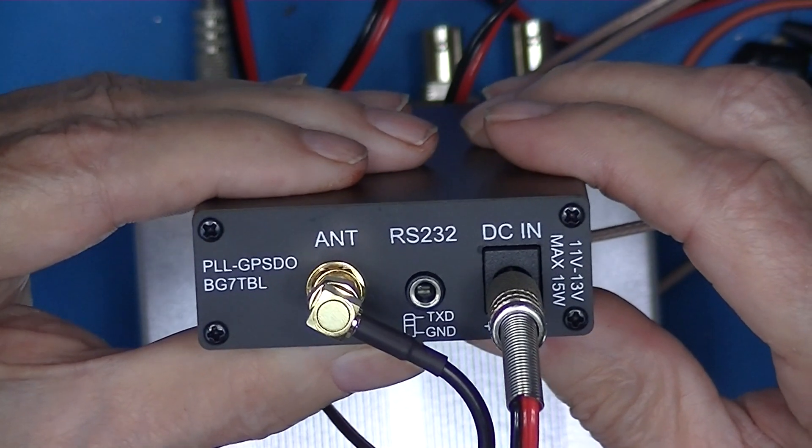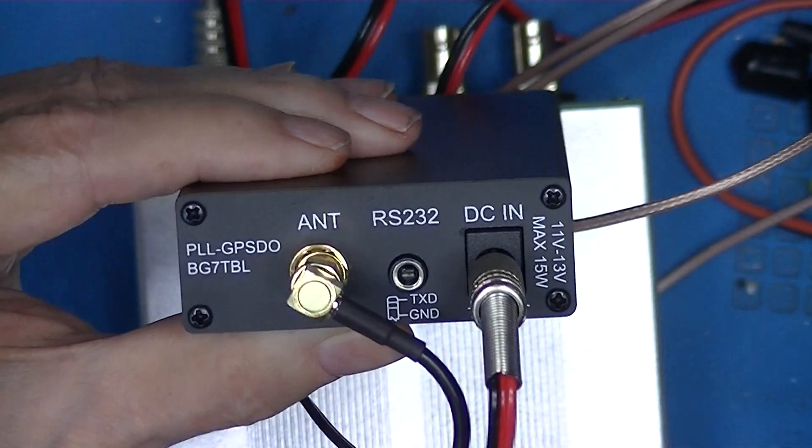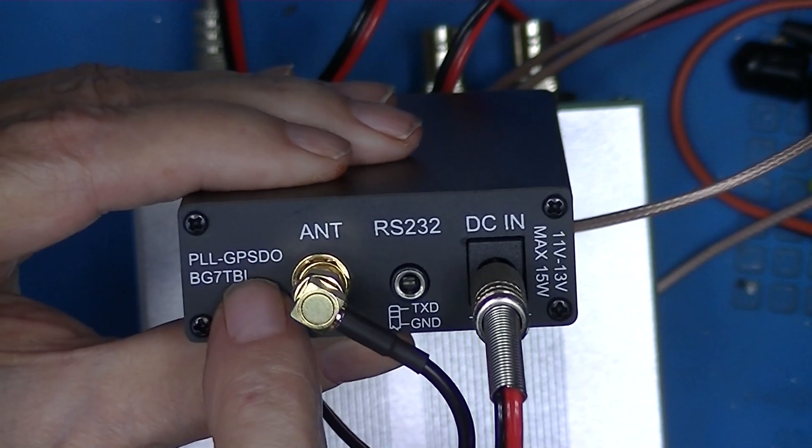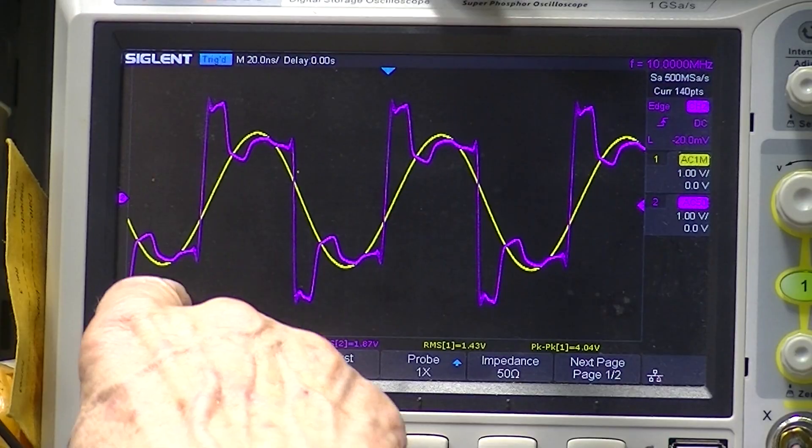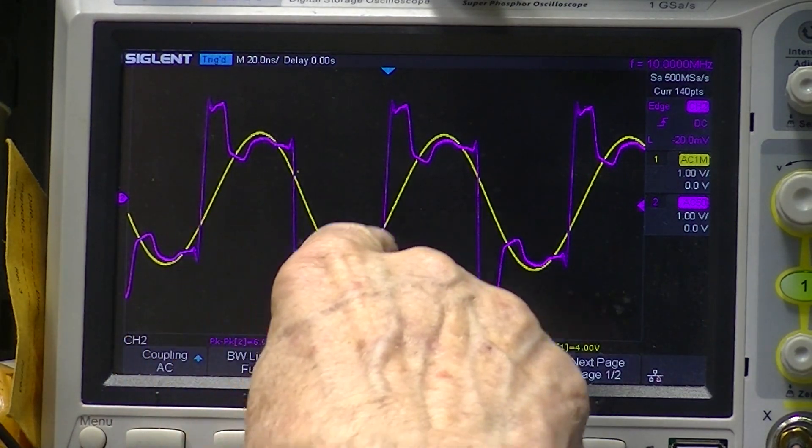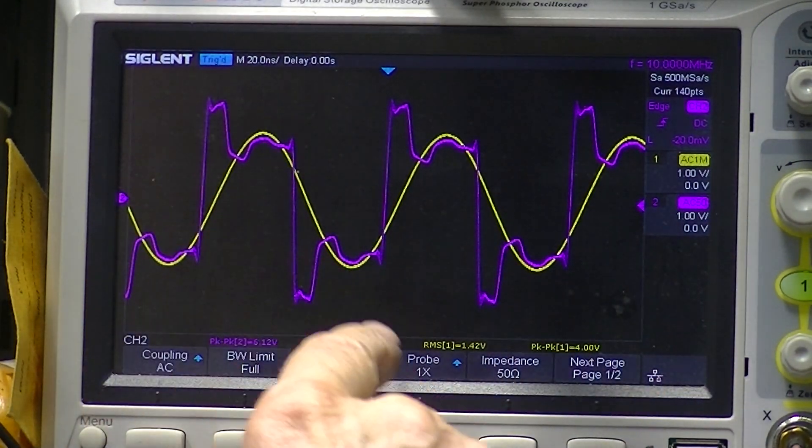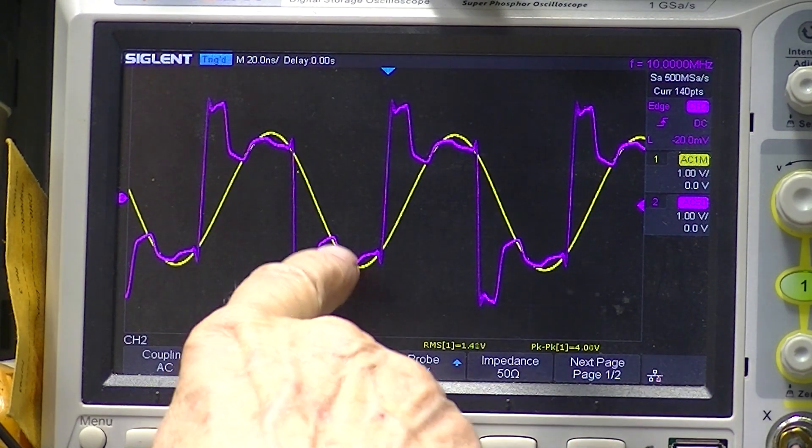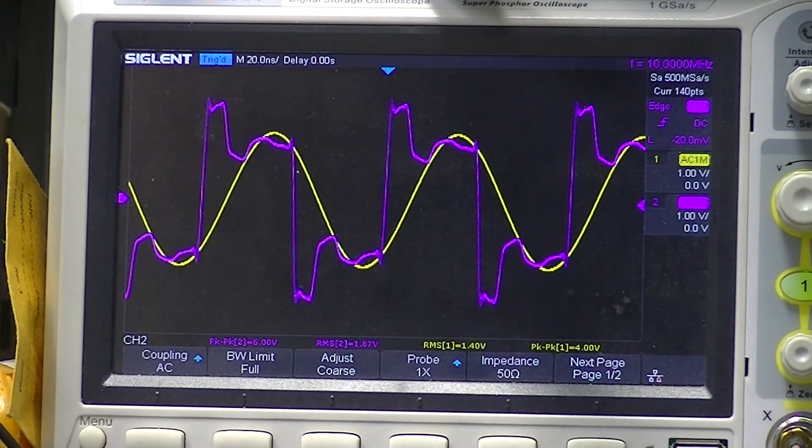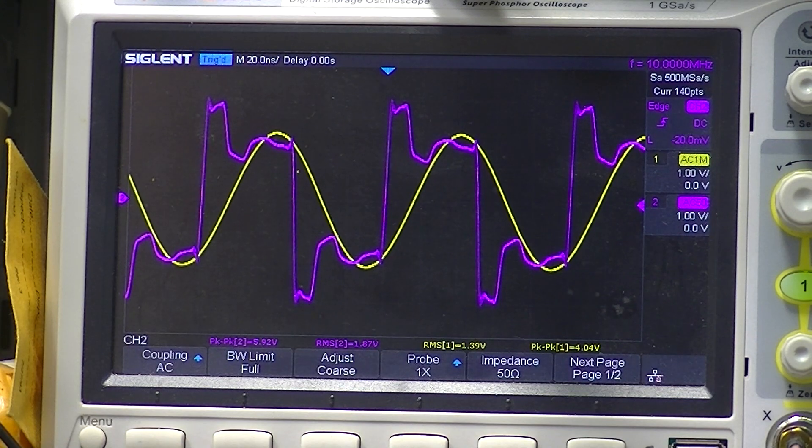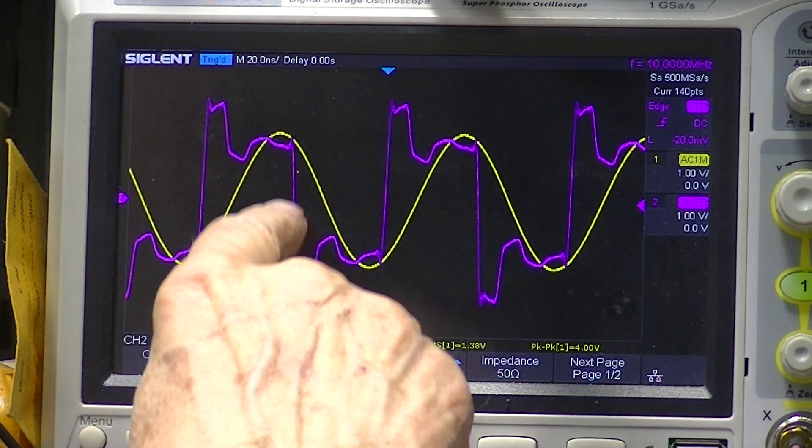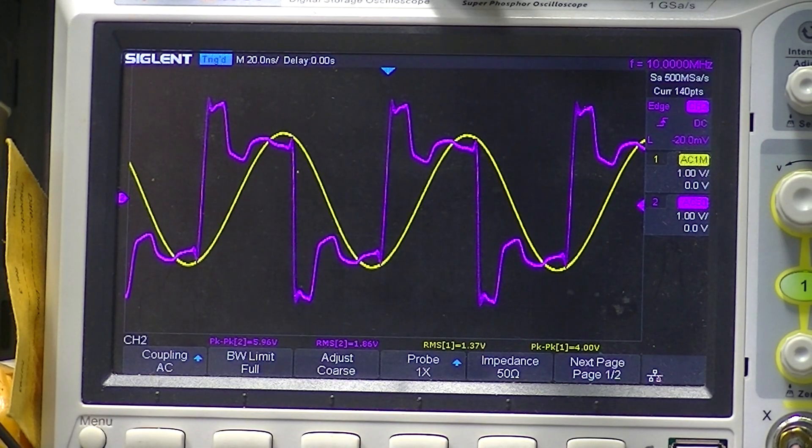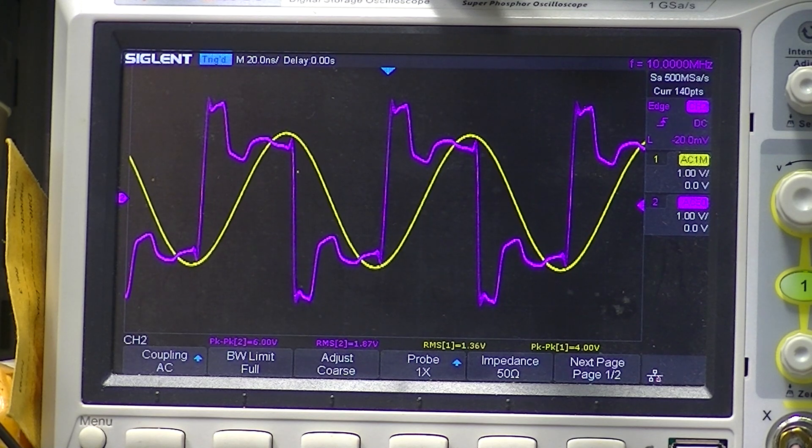This phase-locked loop GPS disciplined oscillator is a refreshing sight to see. The yellow is a sine wave output from the GPS disciplined oscillator, and the violet is a 10 megahertz output from the signal generator.